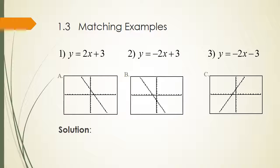Here's an example: match equations 1, 2, and 3 with graphs a, b, and c without graphing. Equation 1 has slope positive 2, so the line rises to the right — that's graph c. Equation 2 has a negative slope and a y-intercept of positive 3, so it crosses the y-axis at 3 — that's graph a. Equation 3, by elimination, is graph b: negative slope crossing the y-axis at negative 3.